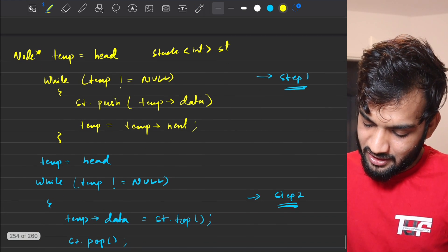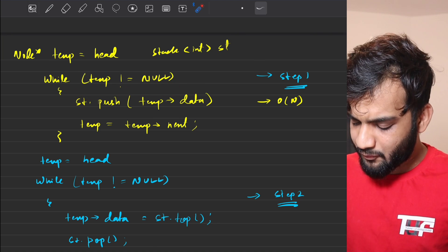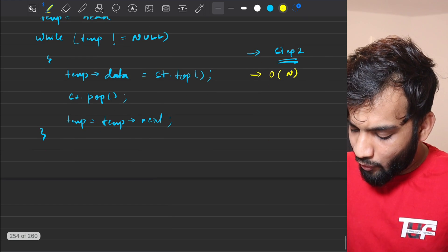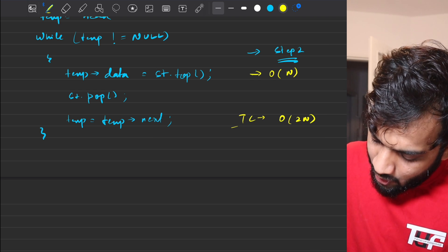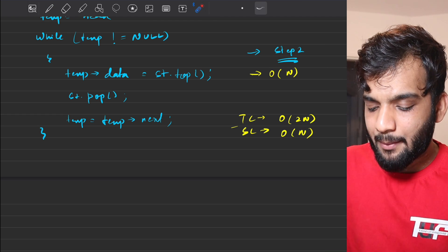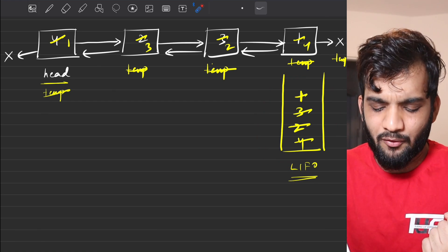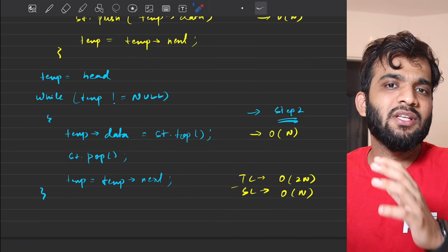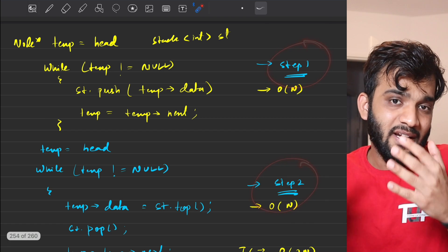For the time complexity: step one takes O(n) since we traverse all elements, and step two also takes O(n). So overall the time complexity is O(2n). The space complexity is O(n) because we are using an external stack to store all the elements. This is a two-pass solution.